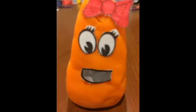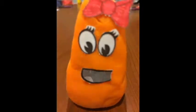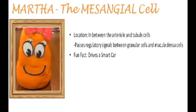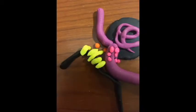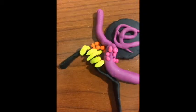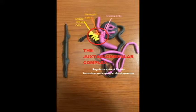Hello. I'm a mesangial cell, and I lie between the arteriole and the tubule cells, which means that I sit between Giorgio and Mac all day. My job is to send regulatory signals between the granular cells and the macula densa cells. Together, we form the juxtaglomerular apparatus. We regulate the rate of filtrate formation and systemic blood pressure using a hormonal renin-angiotensin-aldosterone mechanism. This is an extrinsic mechanism that regulates the GFR.